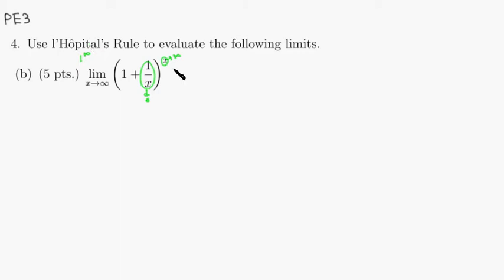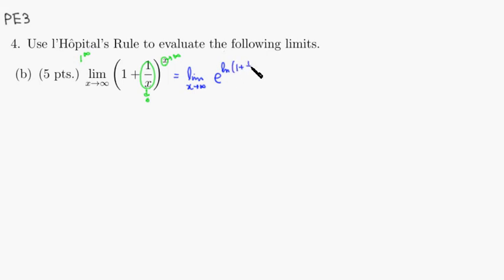Here's the first trick. What we want to do is bring this x down, and the good tool to use is the natural log. So we take the limit as x approaches infinity, then we write e to the natural log. Remember that the exponential function and the log functions are inverses of each other, so they cancel out. Then we use the log property to move this power x and put it in front.